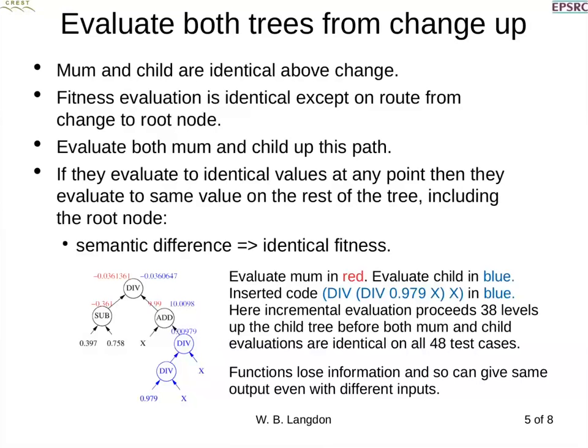This picture shows the original parent as the nodes in black — the common part shared between parent and child — and in blue is the inserted subtree. The child fitness values are in blue and they're different between the parent and child, but as we progressively move from the division point upward, they may at some point become identical, and once identical they'll remain locked identical for the rest of the evaluation.